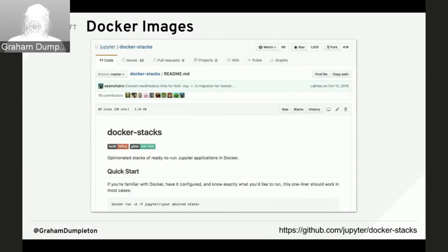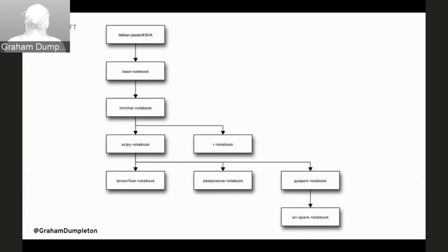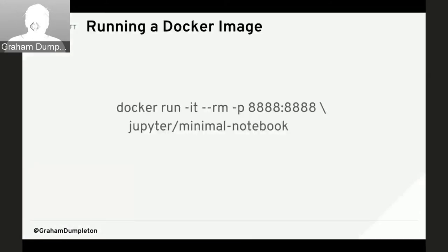The next option is Docker, which lets you run applications inside isolated containers. The Jupyter project provides ready-made images: a minimal notebook image and a scipy-notebook image with NumPy, SciPy, Matplotlib, and many more packages pre-installed. These images also offer Python 2 or Python 3 flexibility. As long as you have Docker running, you can pull the image and start a notebook environment very quickly with a single docker run command.